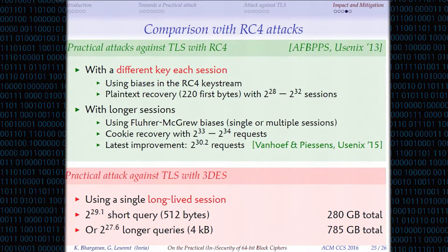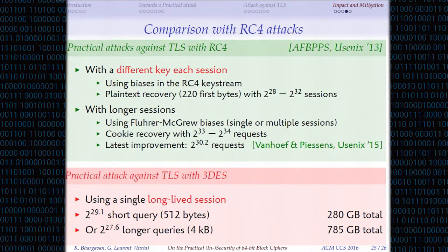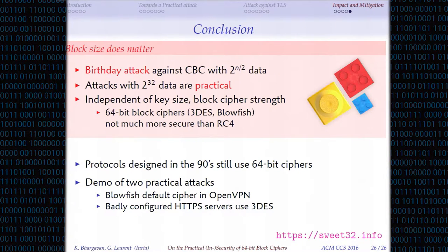It's interesting to compare this with recent attacks against RC4. The attacks are very similar in terms of setting — you need to encrypt the same message many times. The key difference is that for RC4, the ideal case is a different key for each message, whereas for our attack we need the same key for many messages. To conclude: birthday attacks are really practical against 64-bit block ciphers, so be careful with them.